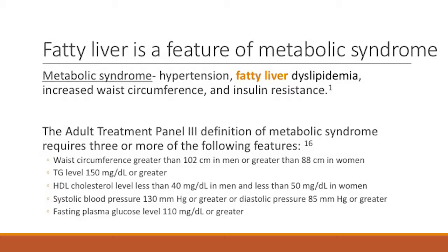Fatty liver is mostly a histologic diagnosis. It is part of the metabolic syndrome, which includes hypertension, dyslipidemia, increased waist circumference, and insulin resistance. For reference, the Adult Treatment Panel 3 definition for metabolic syndrome includes increased waist circumference, changes in the lipid panel, systolic blood pressure, and plasma glucose changes.